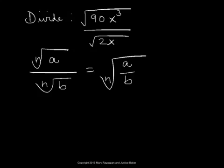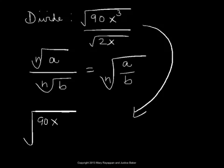and then complete the radical simplification. So in the given problem, we have radical 90x cubed divided by radical 2x. Since the index is same, namely 2 for both numerator and the denominator, we combine these radicals under one radical sign.